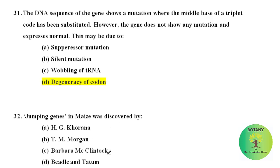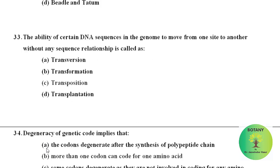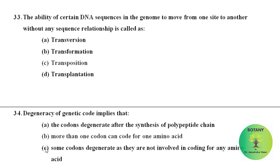Jumping genes in maize were discovered by Barbara McClintock. The ability of certain DNA sequences in the genome to move from one site to another without any sequence relationship is called transposition.